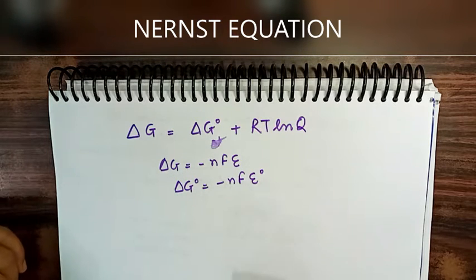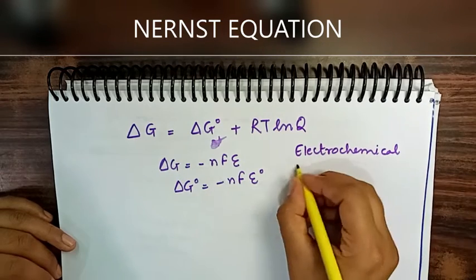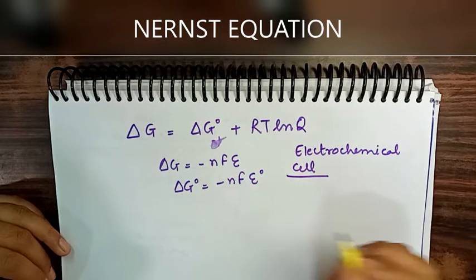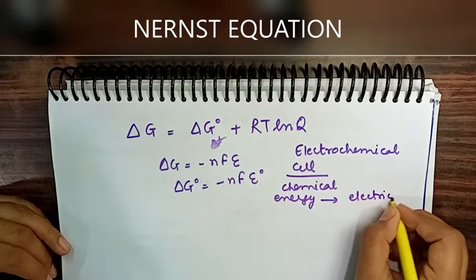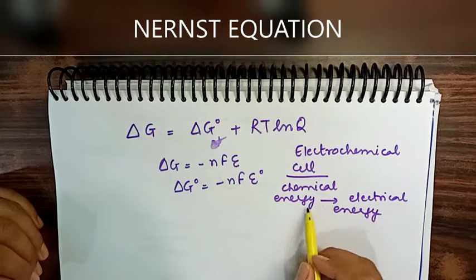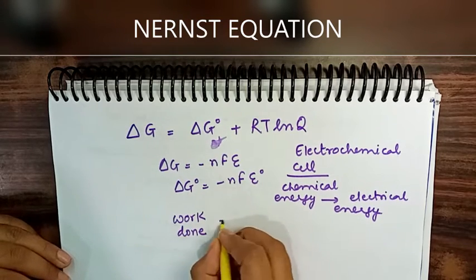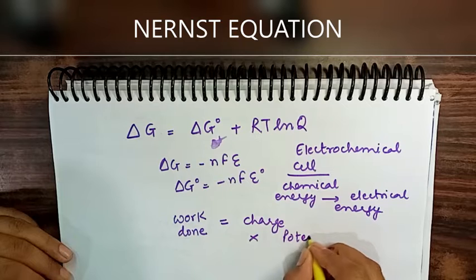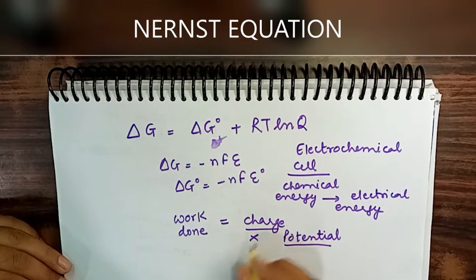An electrochemical cell is a device that converts chemical energy into electrical energy. Since the cell does work, and from physics we know work done equals charge multiplied by potential, we need to determine how much charge is transferred in the cell reaction.